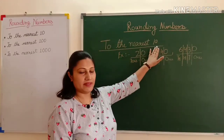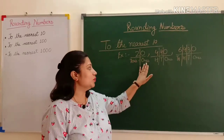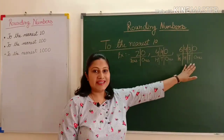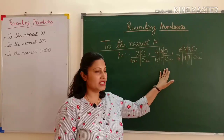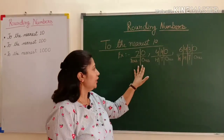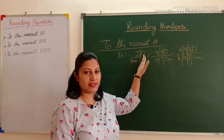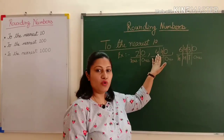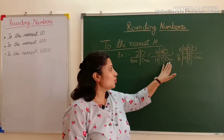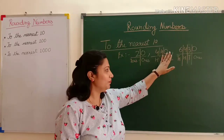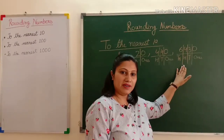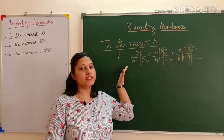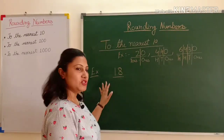To the nearest ten means the ones place must have zero. For example, here we have three types of numbers: a two-digit number, a three-digit number, and a four-digit number. The number 20 has zero in its ones place. The number 440 also has zero in its ones place. Similarly, this four-digit number has zero in its ones place. So these numbers are already rounded off to the nearest ten.